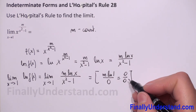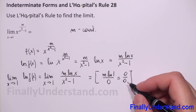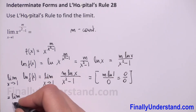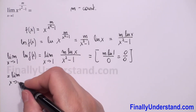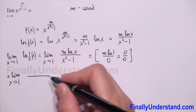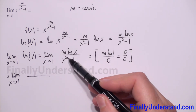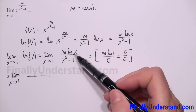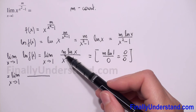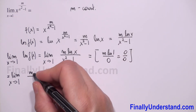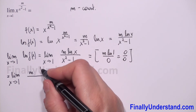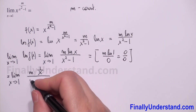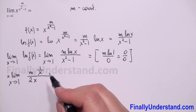When we have the indeterminate form 0 over 0, we can use L'Hôpital's rule. We take the limit as x approaches 1 and find the derivative of the numerator and the derivative of the denominator. The numerator is m times natural logarithm of x — m is constant, so the derivative is m times 1 over x. The derivative of the denominator: derivative of x squared is 2x, derivative of 1 is 0.